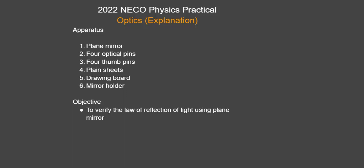For the optics section, this is the apparatus you should expect to be given. The first is a plain mirror, the second will be four optical pins, the third four thumb pins, the fourth is plain sheet — maybe about five or six plain sheets — then the fifth is a drawing board, and the sixth is a mirror holder.